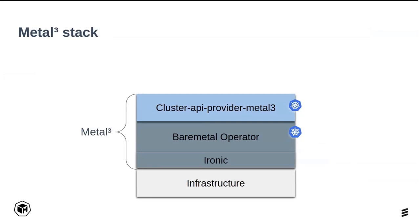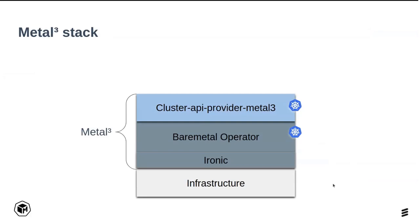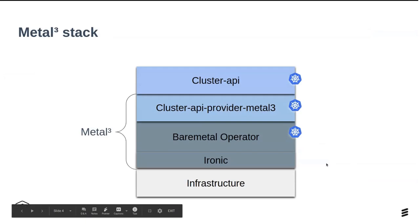The last component in the stack is Cluster API itself, which is the high-level project that offers machine objects and cluster objects. Those objects are represented by different infrastructure providers. For example, if you create a machine object from Cluster API — which at the end of the day represents your Kubernetes node — it will create a bare metal server through the Cluster API Provider Metal Cube and then through the Bare Metal Operator. You'll have a bare metal server managed by the high-level machine object from Cluster API.